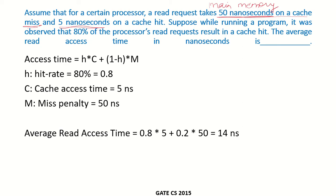While running a program, it was observed that 80% of the processor's read requests resulted in a cache hit — so 80% is the hit rate. The average read access time is calculated using the equation: h·c + (1 - h)·m.